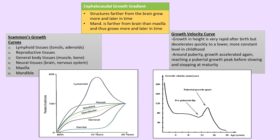Scammon's growth curve and growth velocity curve show how different tissues grow with age. The cephalocaudal growth gradient states that structures farther from the brain grow more and for longer — for example, the mandible grows more and for a longer period than the maxilla, which is closer to the brain. The growth velocity curve shows rapid growth after birth, decelerating to a constant level in childhood, a dip just before puberty, a peak at the pubertal growth spurt, then slowing and stopping at maturity.